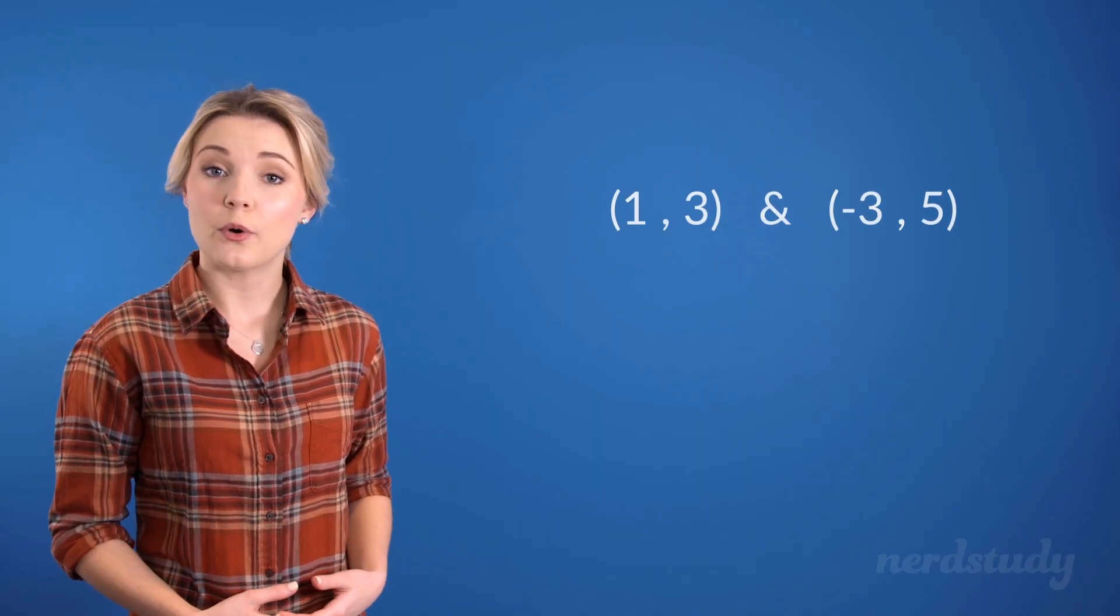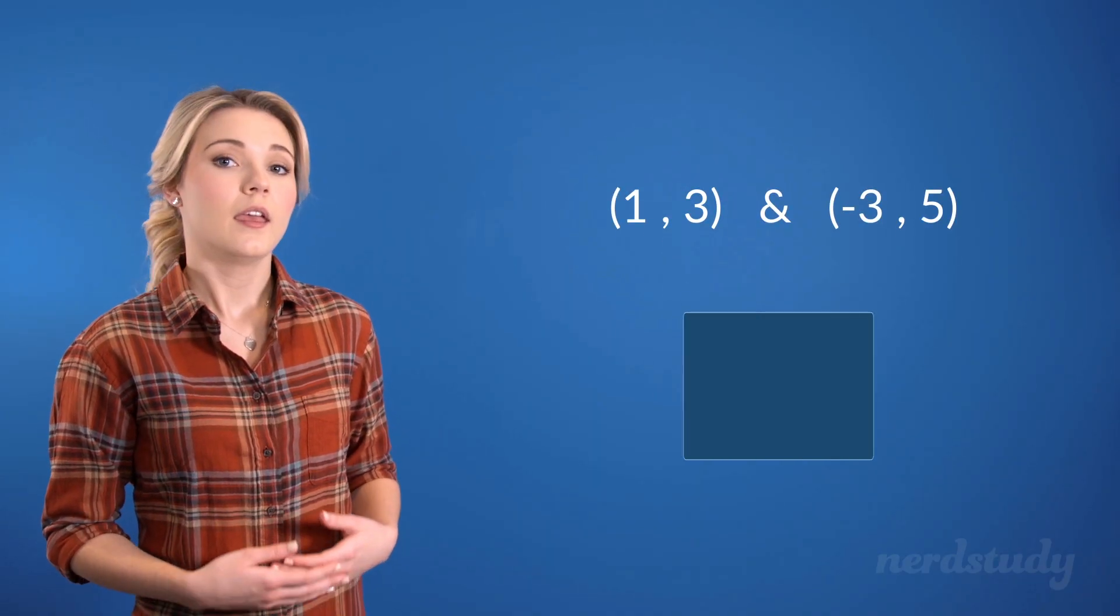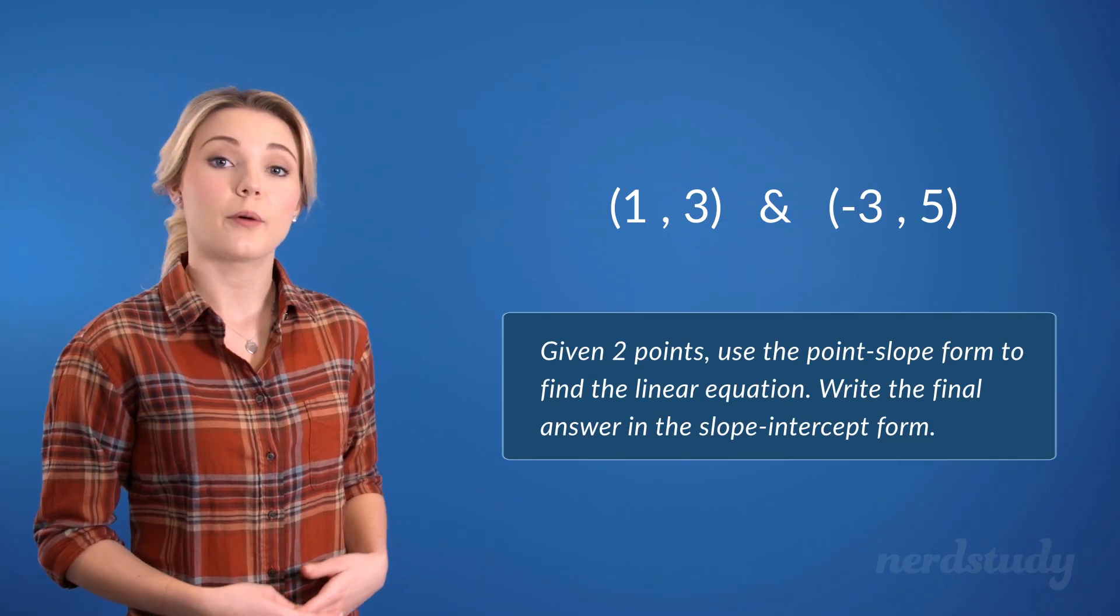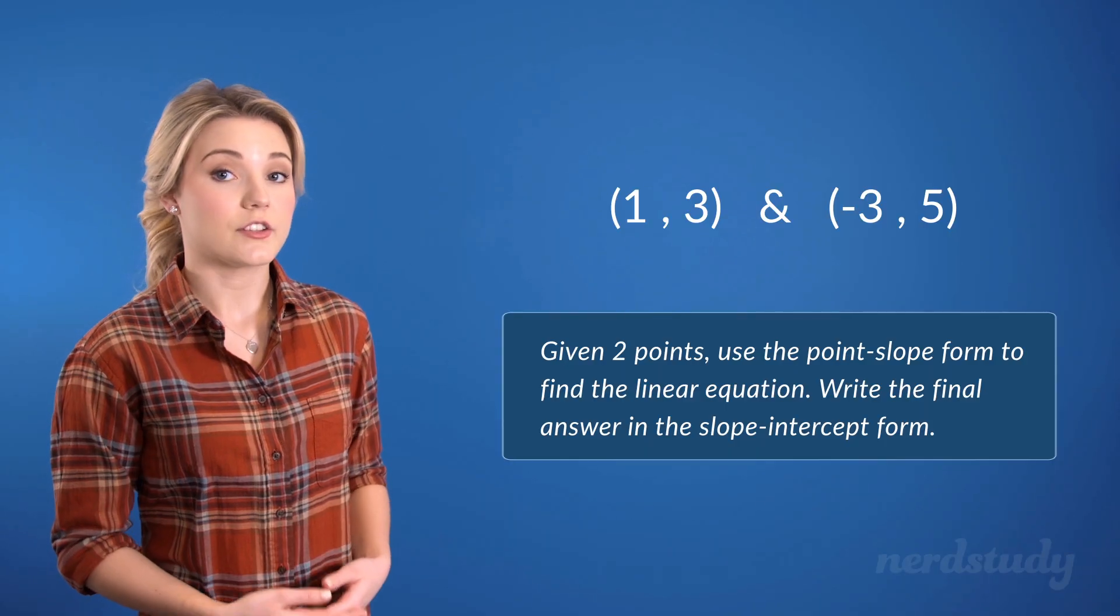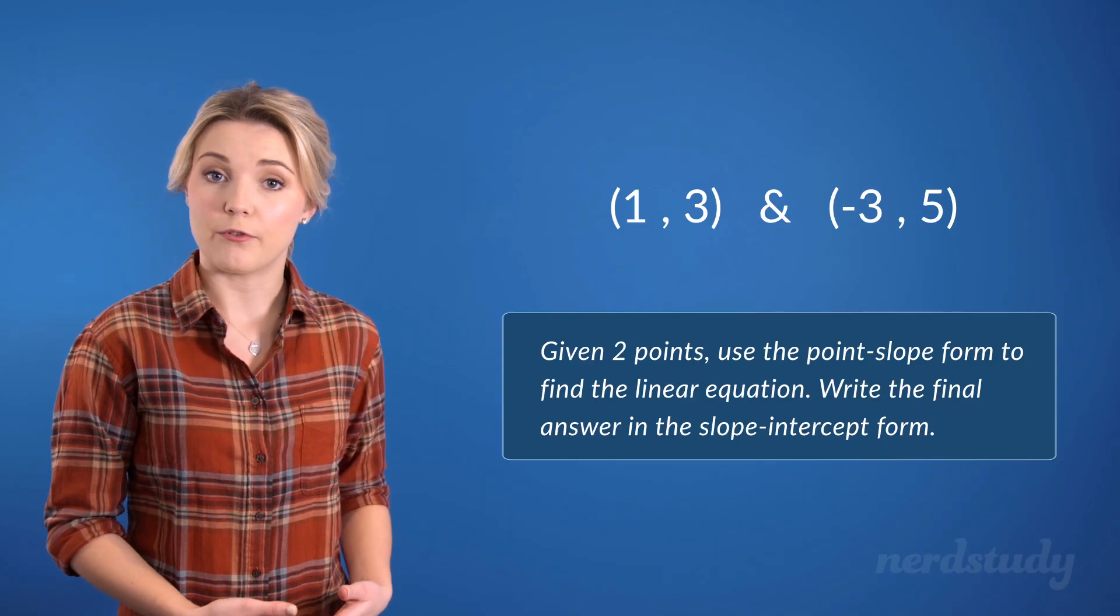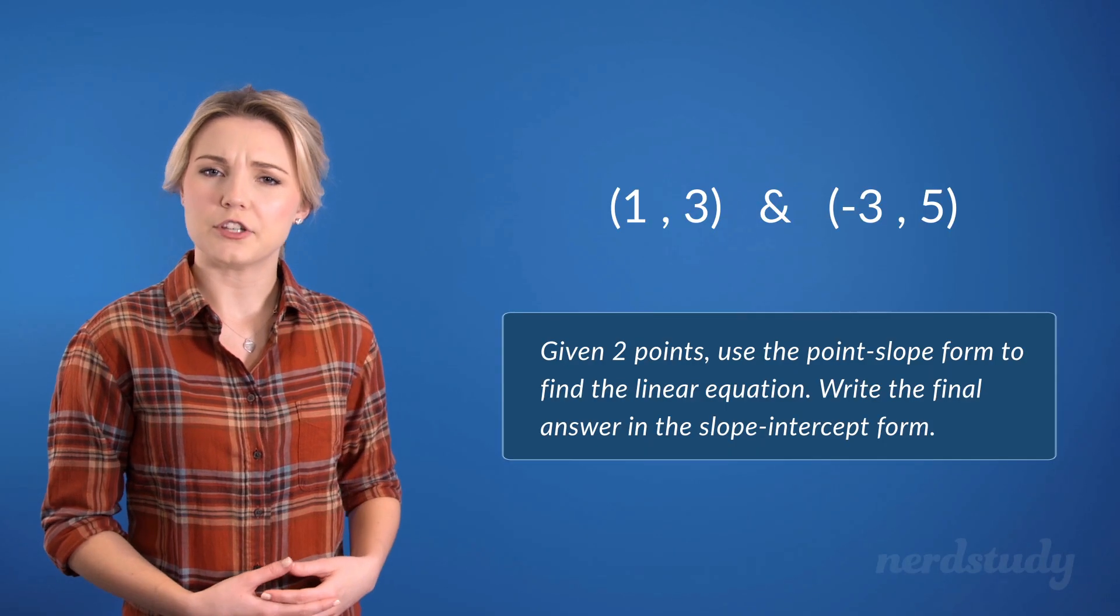Awesome! Now, let's go through another example together. This time, instead of being provided a point and a slope, let's say that we are being provided two points of a line and no slope. If the question wants us to use the point-slope form to find the answer, and then finish the answer off as a slope-intercept form, how could we go about doing this?